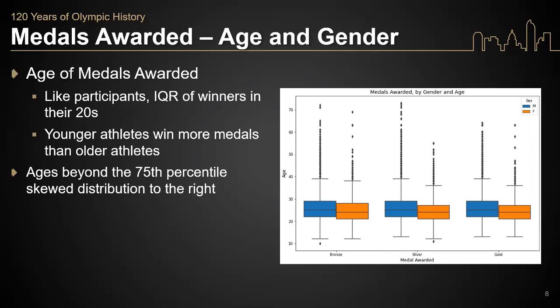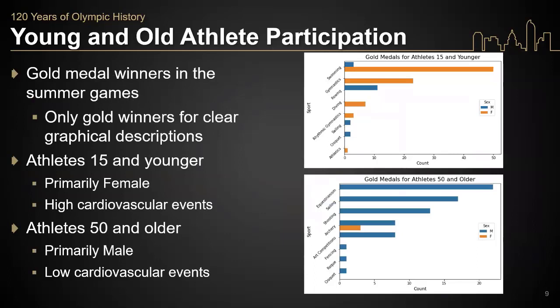Let's take a closer look at how the young and the old did in the Olympics, broken out just with gold medal winners to keep things simple. Athletes 15 and younger, displayed on the upper right with the horizontal bar chart, were primarily female and participated in cardiovascular events such as gymnastics and swimming. Athletes 50 and older were primarily male and engaged in lower cardiovascular events such as archery and shooting.